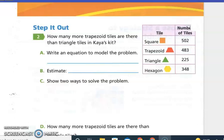For Kaya's kit, write an equation to model the problem. How many more trapezoids? So what does that show us? Is the trapezoid going to be bigger number or the triangle? Trapezoid. So we're going to write 483 minus - what? How many triangles? 225.